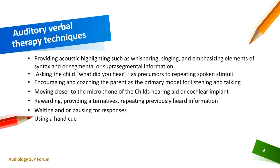Next is auditory verbal therapy techniques. First is providing acoustic highlighting such as whispering, singing, and emphasizing elements of syntax and/or segmental or suprasegmental information. Second is asking the child 'what did you hear?' as a precaution before repeating spoken stimuli. Next is encouraging and coaching the parent as the primary model for listening and talking. Next is moving closer to the microphone of the child's hearing aid or cochlear implant. Next is rewarding, providing alternatives, and repeating previously heard information. Next is waiting and/or pausing for responses. And next is using a hand cue.